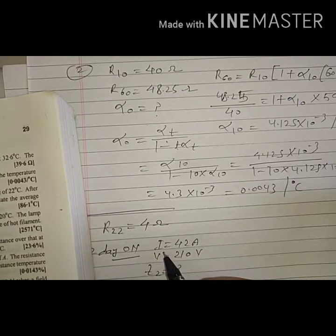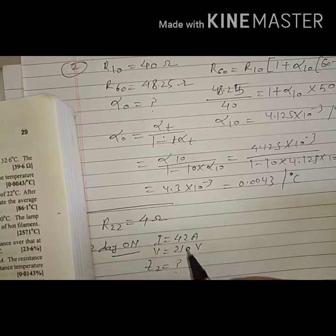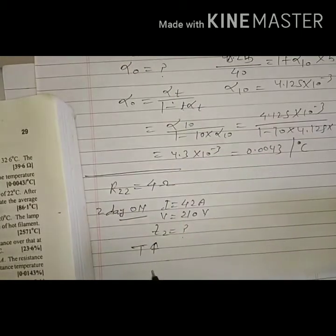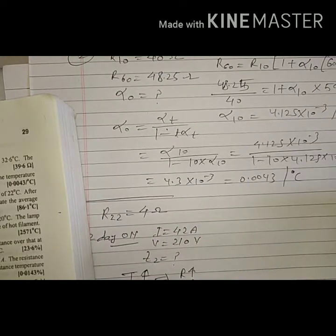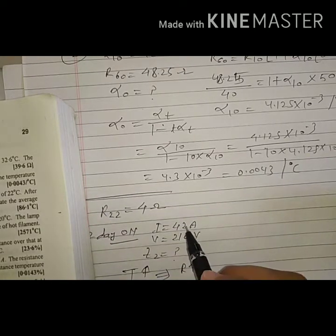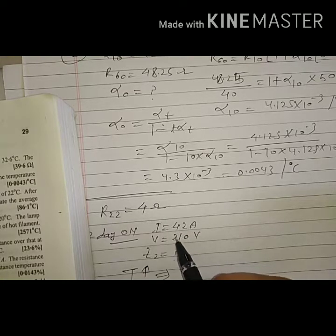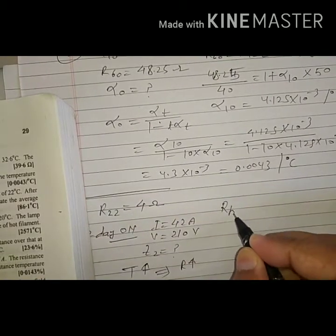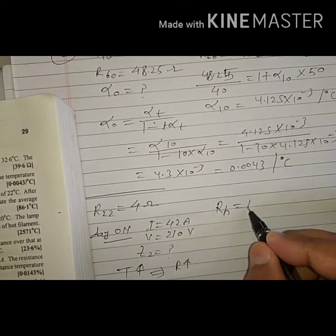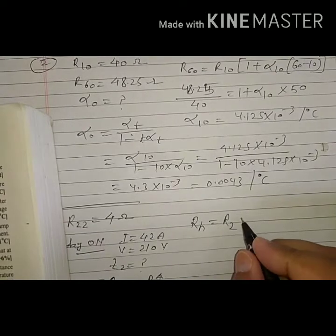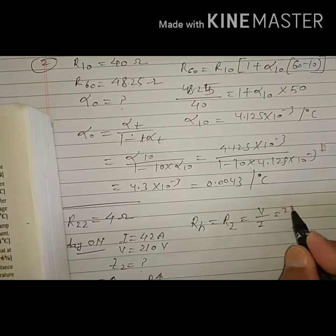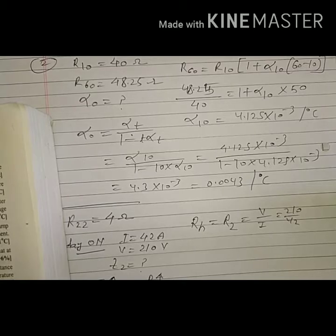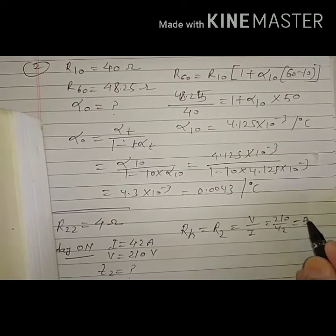When the coil is on after two days, coil temperature will be high, meaning resistance will also be high. The hot resistance R₂ = V / I = 210 / 42 = 5 ohm. So the final hot resistance is 5 ohm.